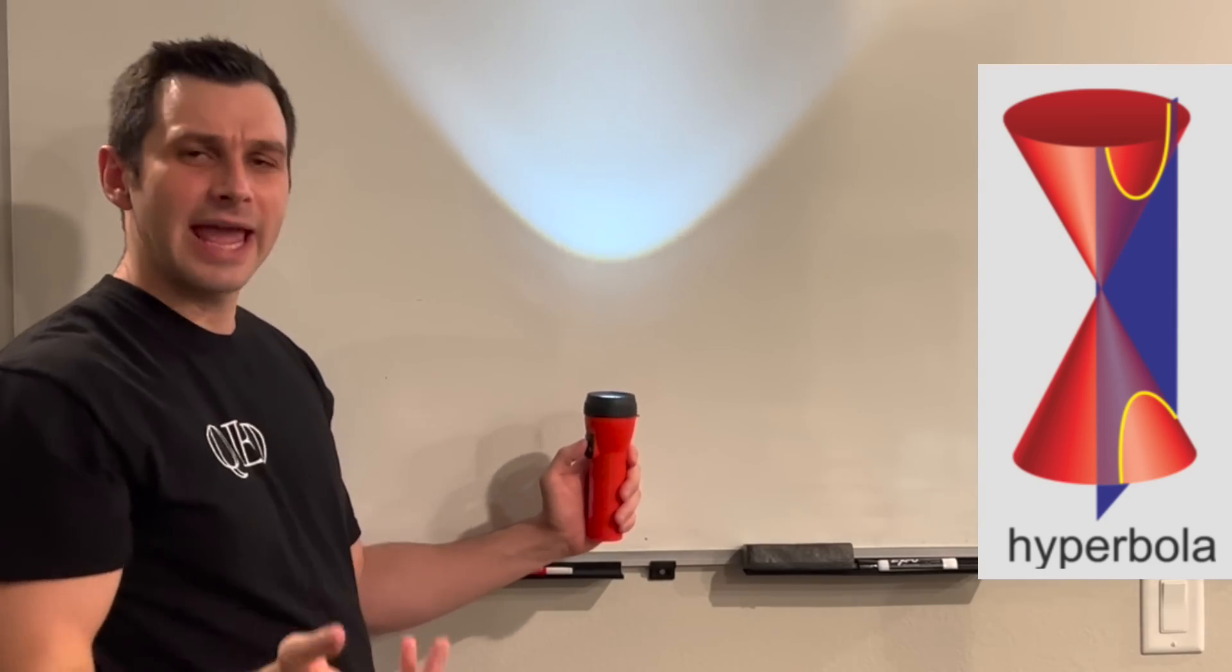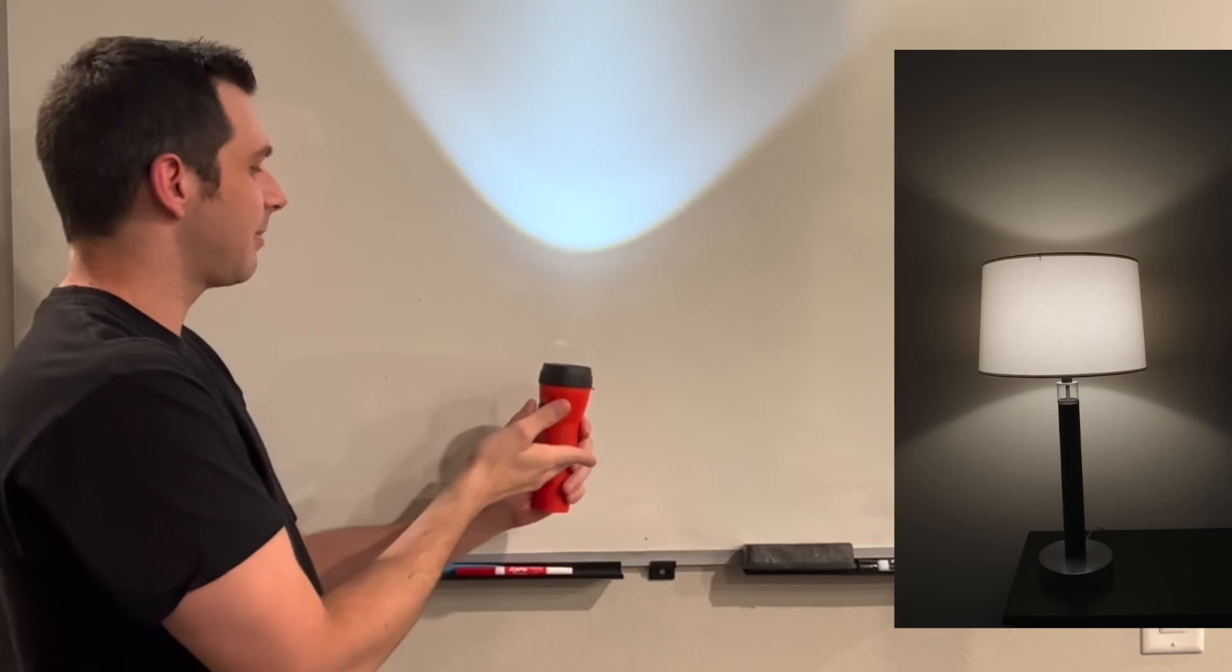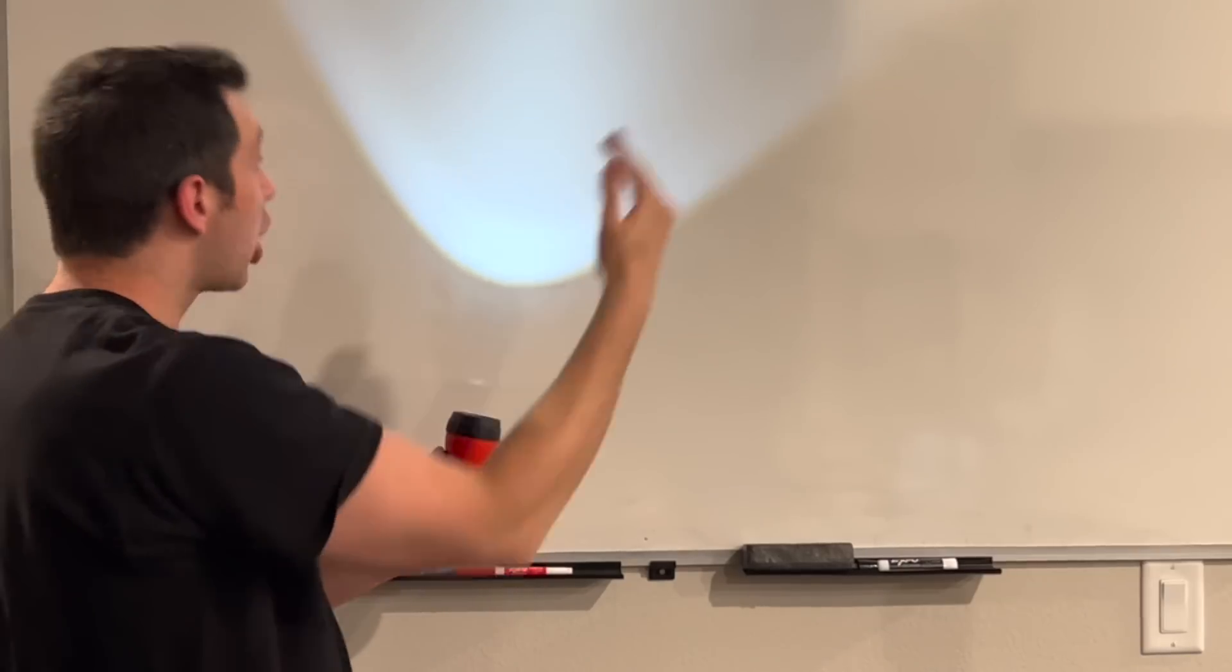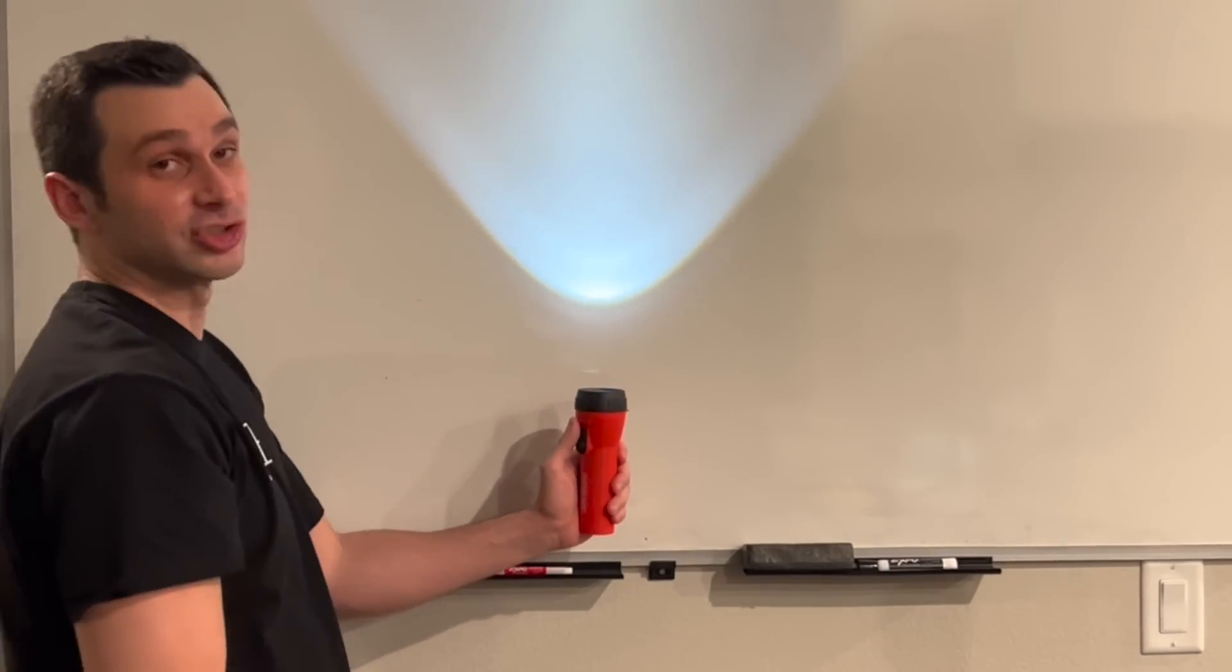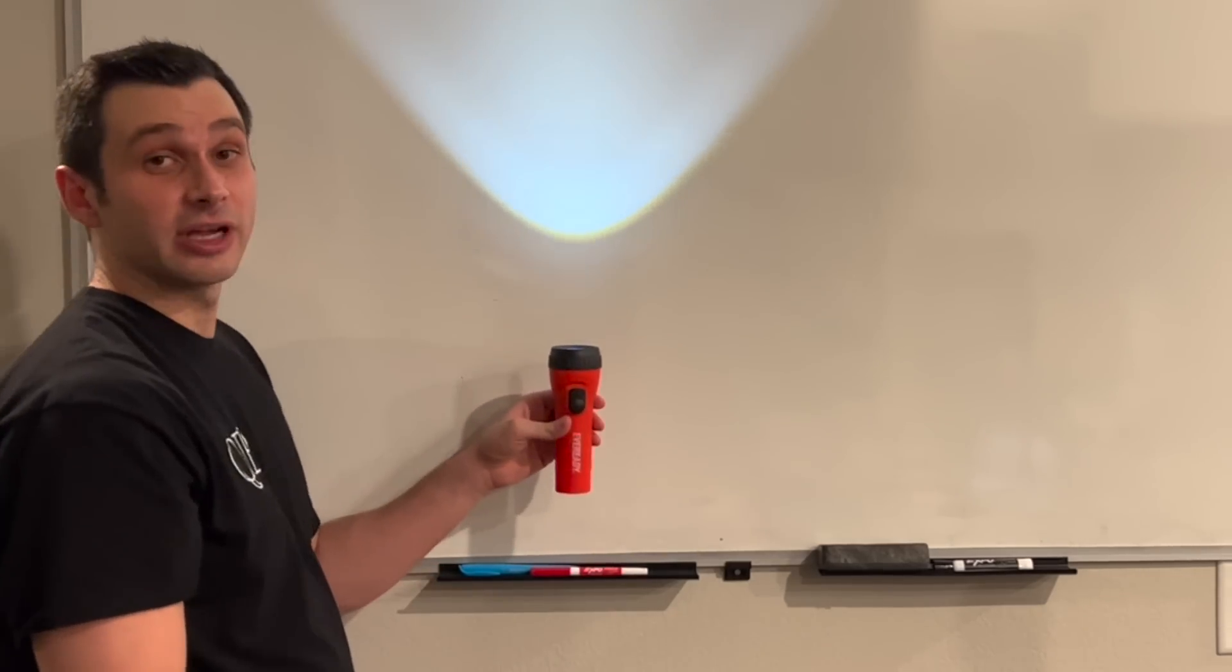If you have a lamp near a wall, you've probably seen this a million times, because a lamp is kind of the same idea. You have a light beneath the circular hood, it's going to create a cone of light, and you're going to get this shape. Now unfortunately, I can't angle the wall, but I can angle the flashlight, the cone.